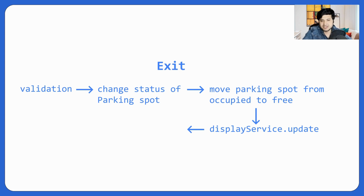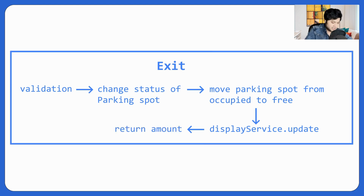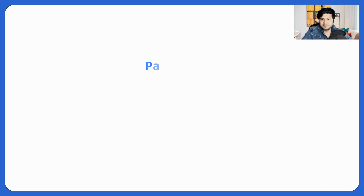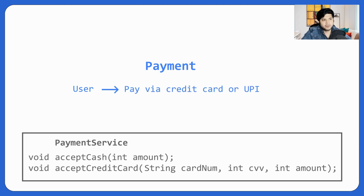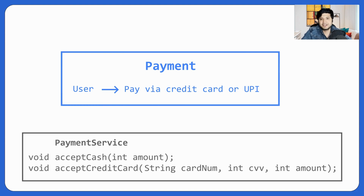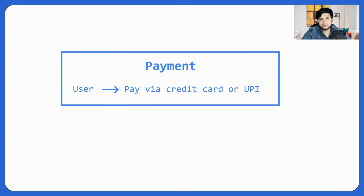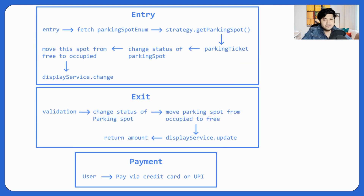We return the amount to the person — they need to pay this amount. For payment, the person can pay via credit card or whichever means they prefer. The payment service has those methods and they would be called. This is how the payment service works.